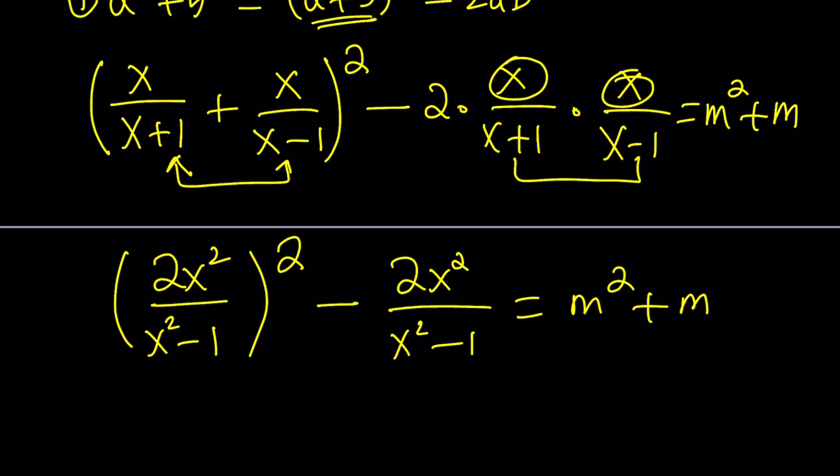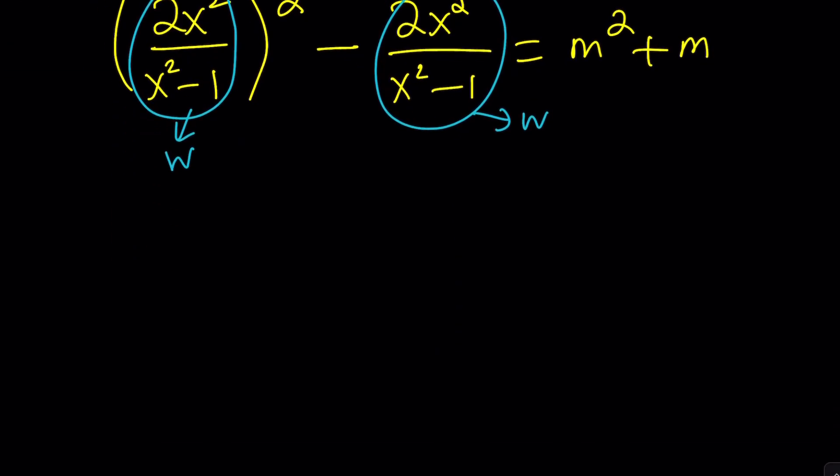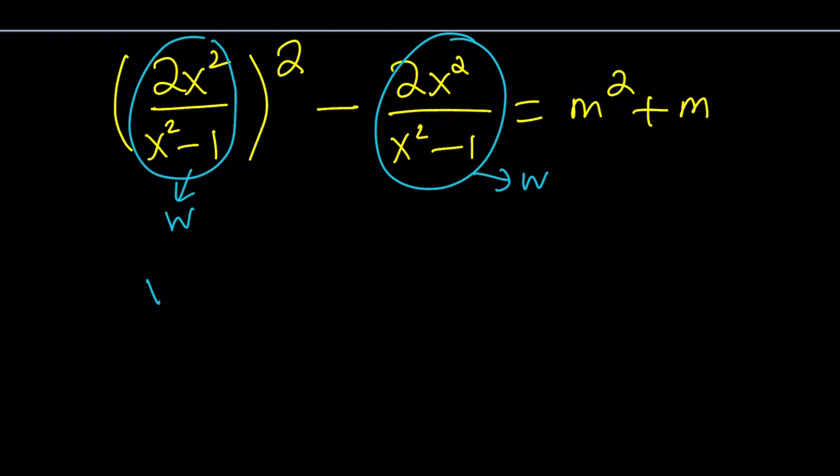At this point, you know what's calling substitution, right? My favorite method. So if I call this something, how about w? I don't know why w, but I guess you could call it. By the way, in the original book I think the problem statement uses z, but I didn't want to use z because I usually use z with complex numbers. Now we get the following equation by changing this: w squared minus w equals m squared plus m.